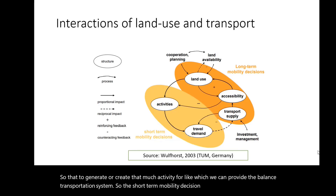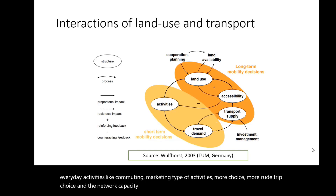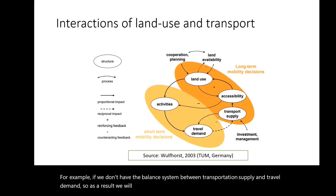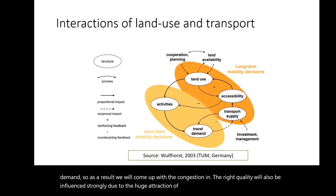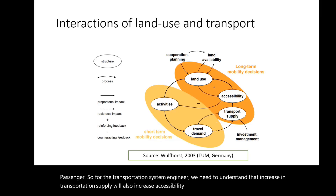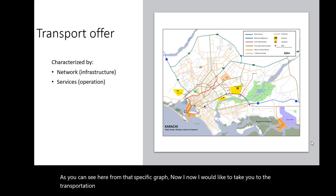Shorter mobility decisions have a greater influence on everyday activities like commuting and marketing, as well as more route choice and network capacity. If we don't have a balanced system between transportation supply and travel demand, we will end up with congestion and ride quality will be strongly influenced. For transportation system engineers, an increase in transportation supply will also increase accessibility, and for more accessibility more land will be needed.